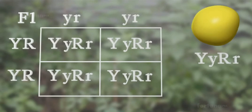The gametes from the F1 generation with a heterozygous genotype are matched in the Punnett square.